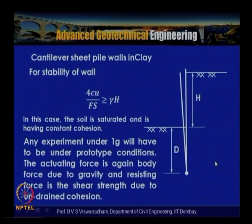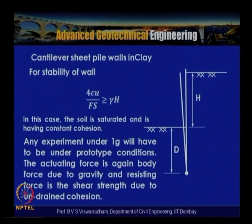Just as with slopes in clay, here also the c_u divided by gamma h term appears. Any experiment done under 1g will have to be under prototype conditions, since the actuating force is again body force due to gravity and the resisting force is shear strength under undrained conditions. A small-scale physical model test at normal gravity would not be realistic and may not represent the equivalent full-scale model in the field.